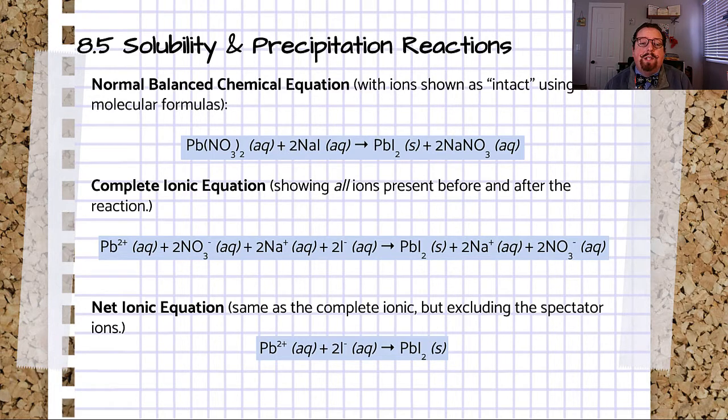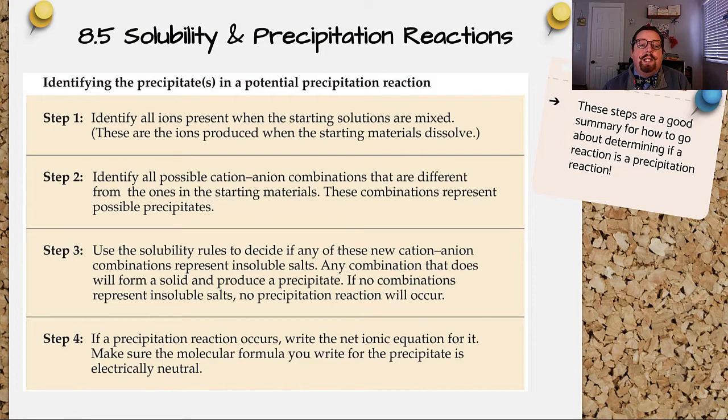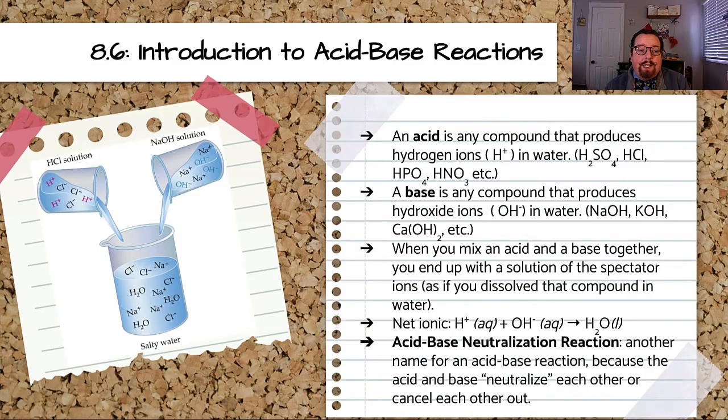To find the net ionic equation from here, we just cross out the spectator ions, or the ones that are the same on both sides. This gives us a really shorthand picture of which ions are actually reacting to form our precipitate. Here's a really good summary of the steps you should follow to determine if your reaction is a precipitate reaction, and what to do if it is.